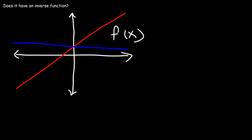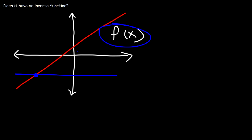So if we draw a horizontal line, and f of x touches the horizontal line more than once, that means f of x is not a one-to-one function and does not have an inverse function. But in this example, it only intersects the horizontal line at one point. So f of x is a one-to-one function, which means that it has an inverse function.